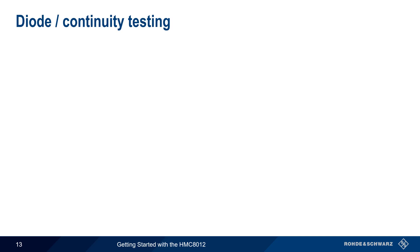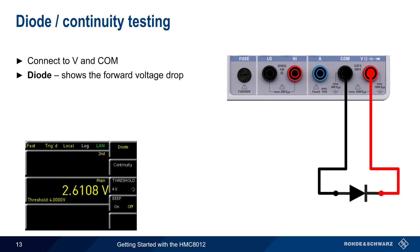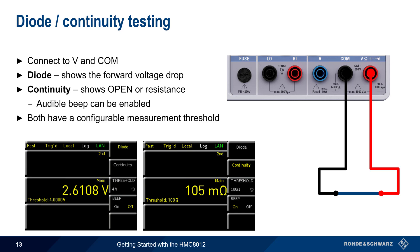Next we'll look at diode and continuity testing. For both measurements, connections are made to the V and COM jacks. In diode mode, the HMC will apply a voltage and display the forward voltage drop across the diode – for example, 2.6 volts. In continuity mode, the word 'open' or the resistance between the leads is displayed. An audible beep indicating continuity can also be enabled. Both diode testing and continuity testing have a user-configurable measurement threshold.